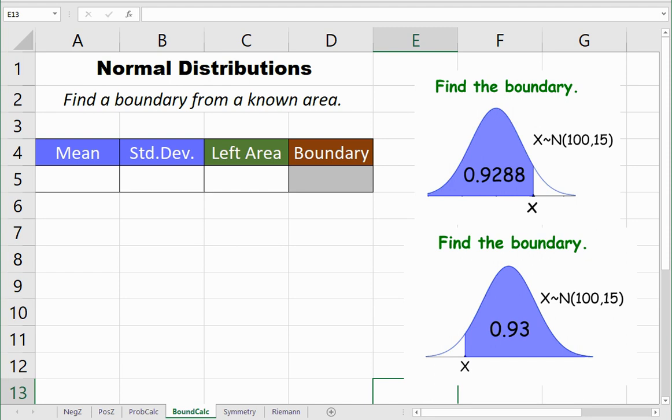In this video, I will teach you how to make a calculator for finding a boundary from a known area. This is the second objective when dealing with normal distributions. We've already learned how to find areas when we know a boundary. We can find an area which represents a probability under the bell curve. Now we'll be going inversely to that.